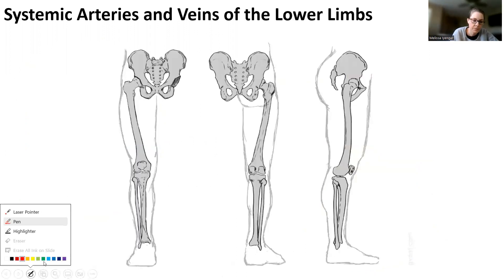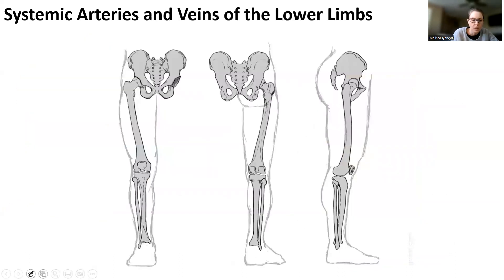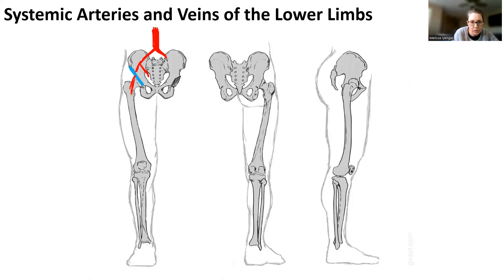There is a vein that goes with each one of these, running parallel to all of them, and that drains into the inferior vena cava. So all of that has a parallel vein. Looking at the summary drawing: we have the abdominal aorta, and right around L4 we see the common iliac. Then internal iliac, and it's helpful to draw where the inguinal ligament is — so the external iliac runs like that.